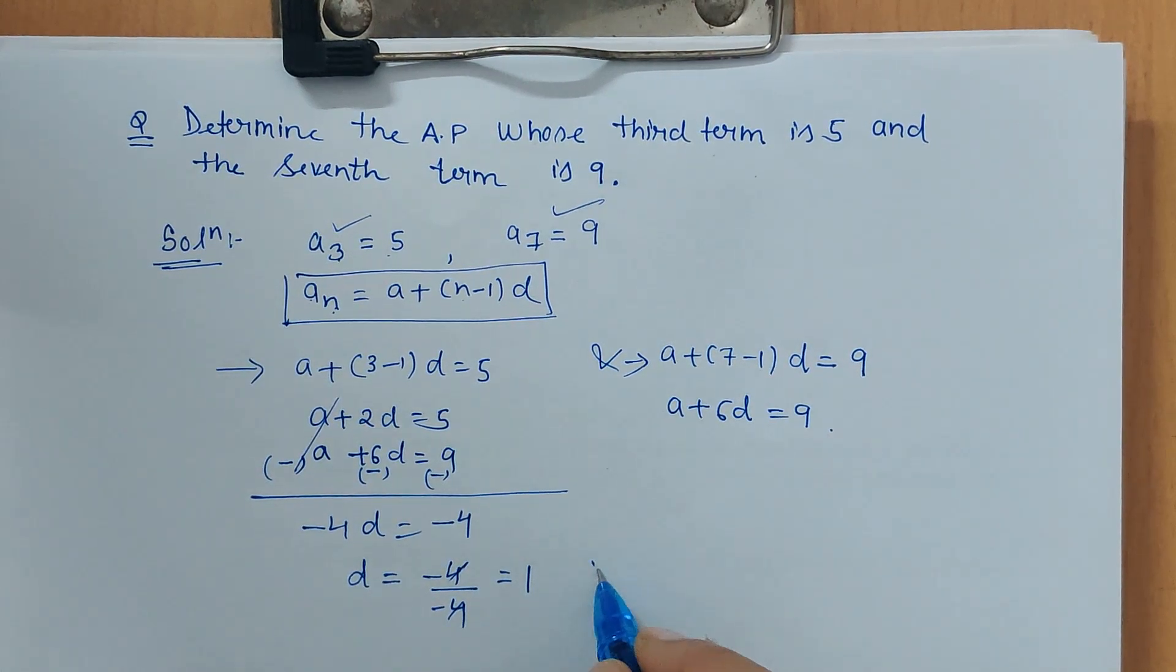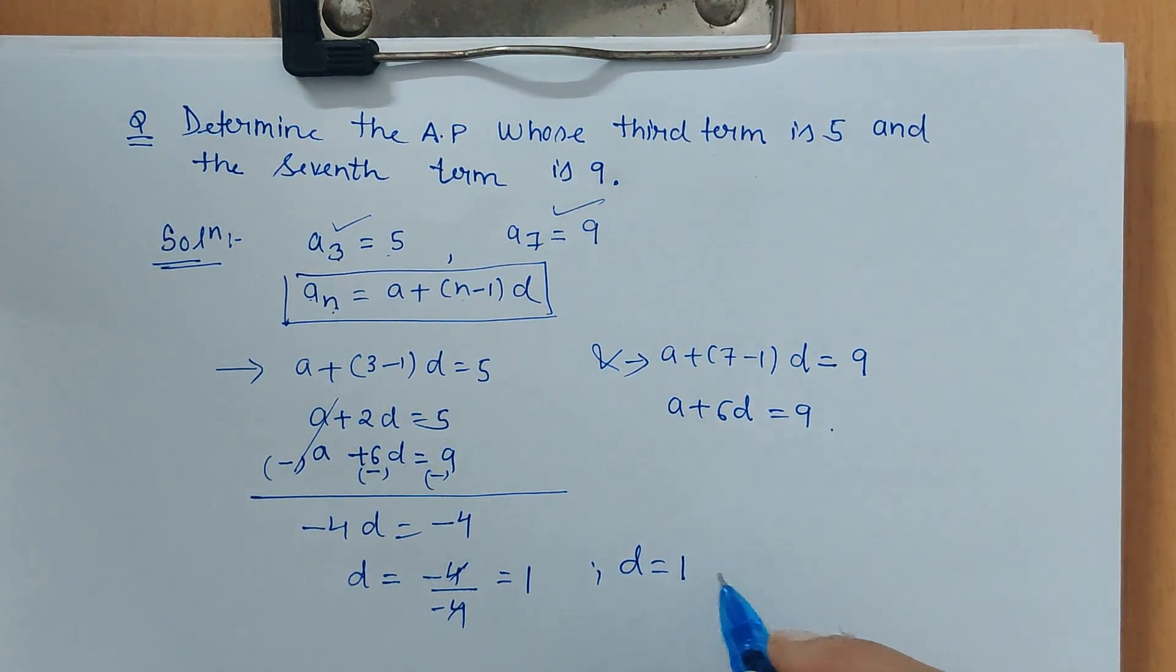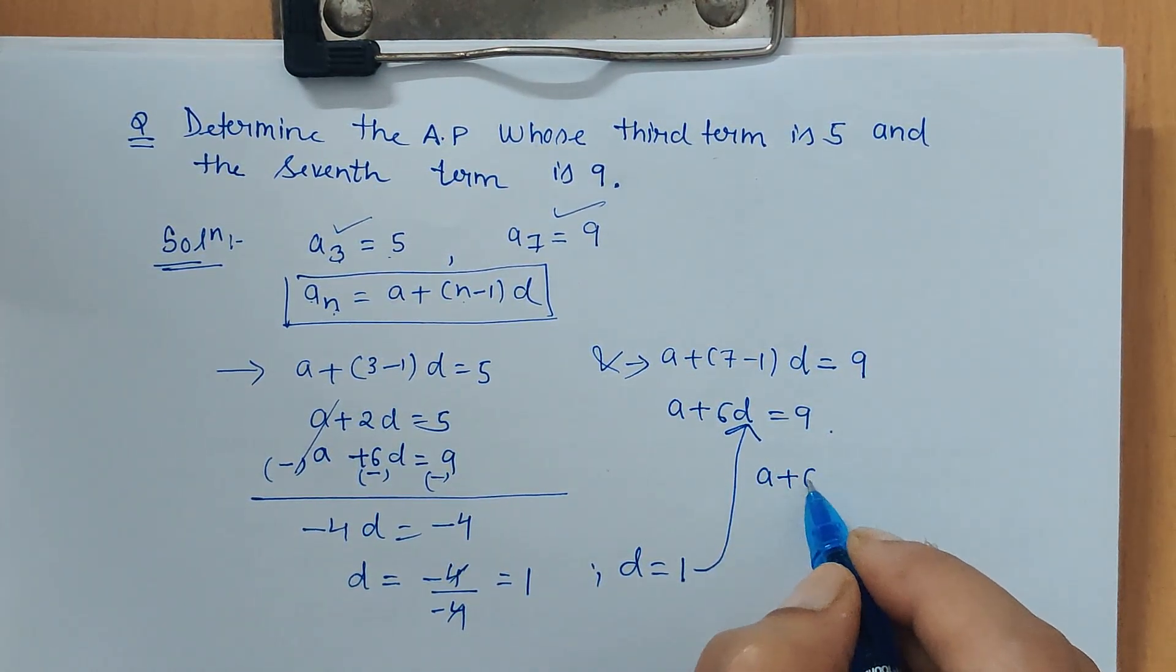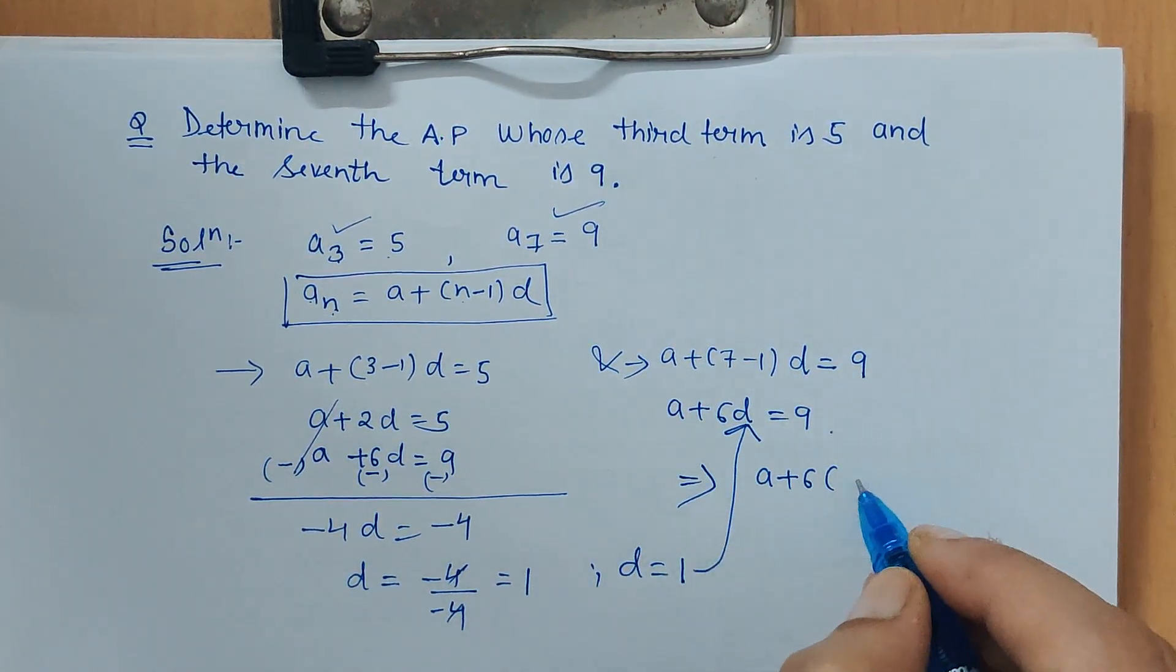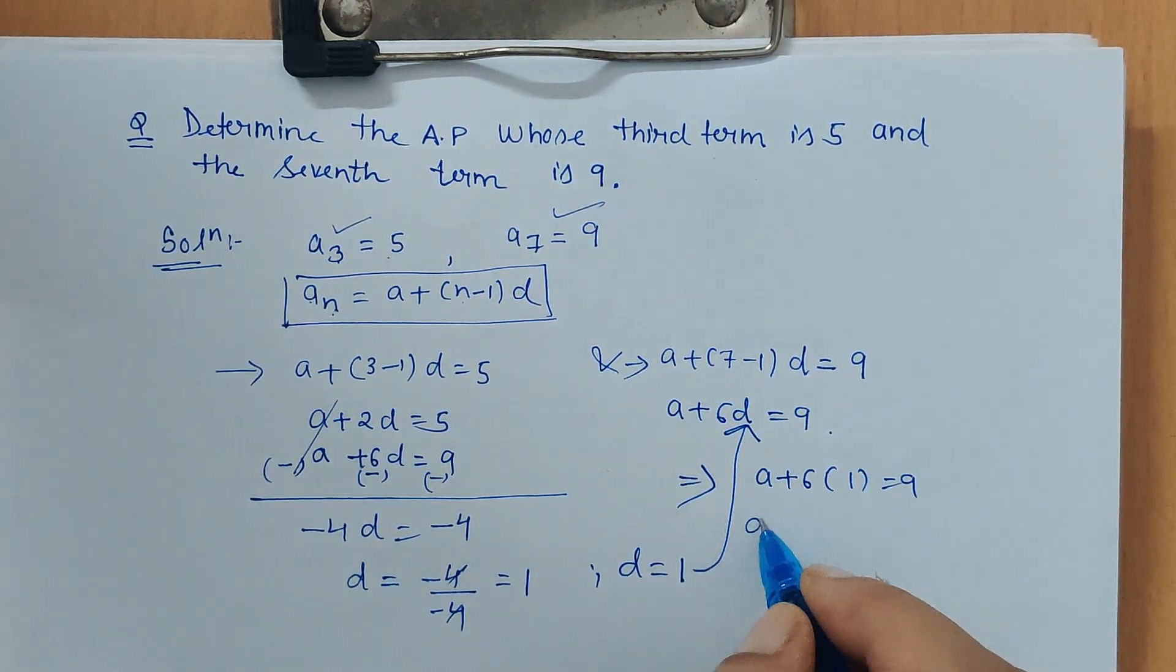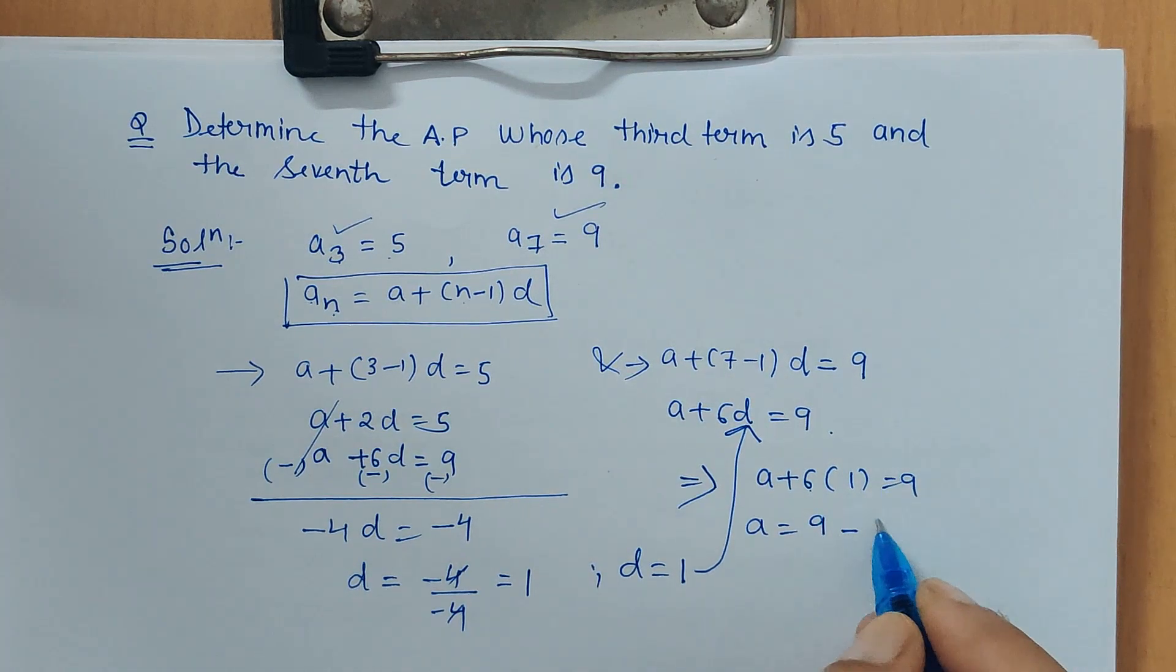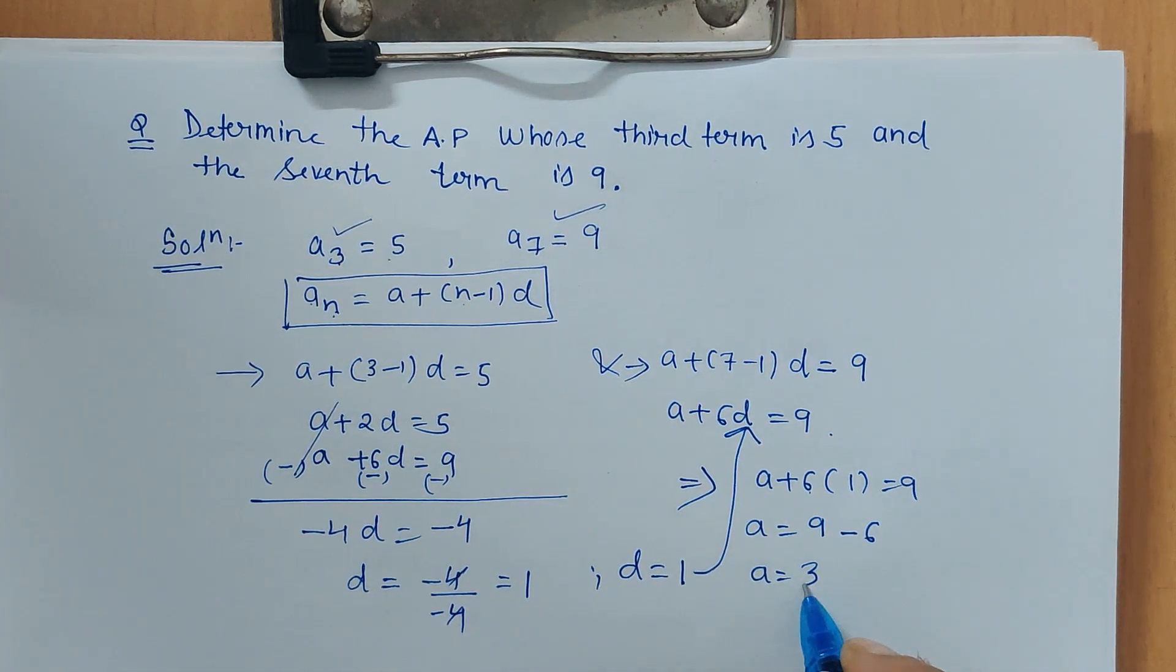We get d is 1. Now put this d value in any of the equations. So a plus 6 times 1 is equal to 9. When 6 is shifted to the right-hand side, it becomes minus 6. So a is 3.